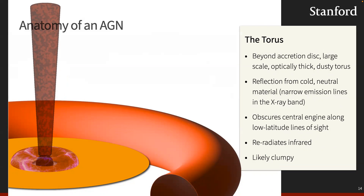Question: can the corona be the base of the jet? Yes — one leading idea is that the corona is the base of the jet, and the X-ray-emitting region we call the corona is actually the base of the jet producing X-ray emission.